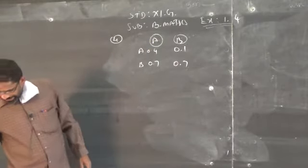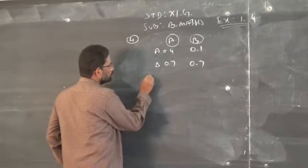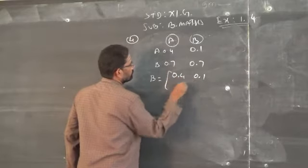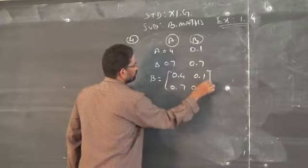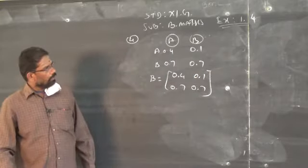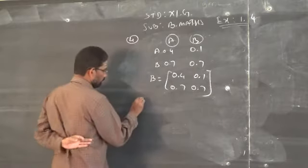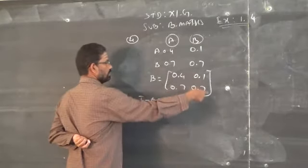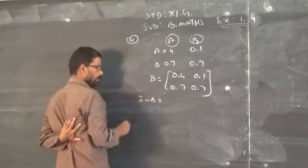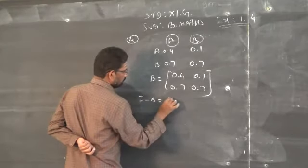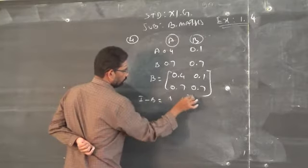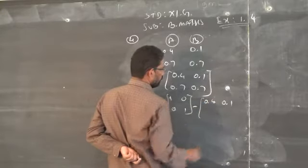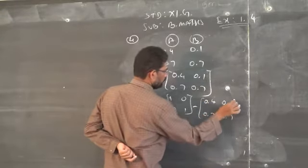This is called the technology matrix. I call it capital B because B always stands for the technology matrix. So B equals the matrix: 0.4, 0.1, 0.7, 0.7. The technology matrix is of order 2 by 2. As usual, you have to find I minus B, where I is the unit matrix of order 2 by 2.